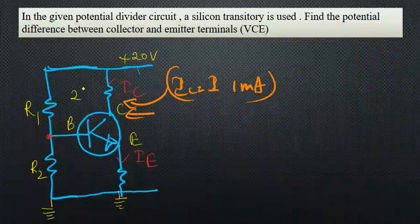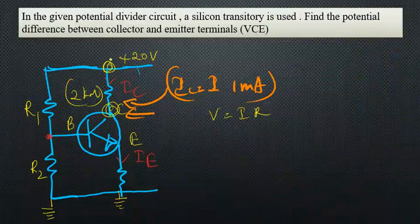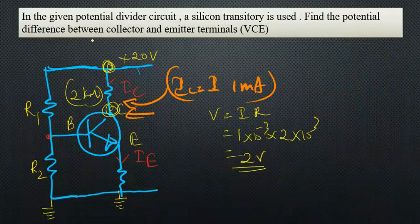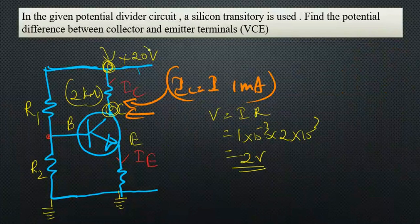Let's apply V equals IR because we can find the potential difference between these two points. I is 1 milliampere, 1 times 10 to the power minus 3, times 2 kiloohms, 10 to the power 3—we get 2 volts. The potential difference is 2 volts. The highest potential here is 20 volts, so the difference is 2, then the potential at C has to be 20 minus 2, which is 18 volts.